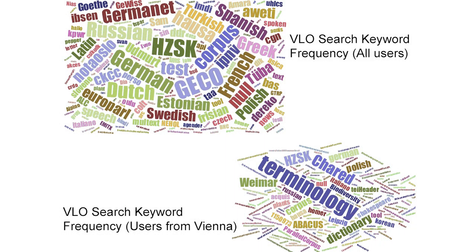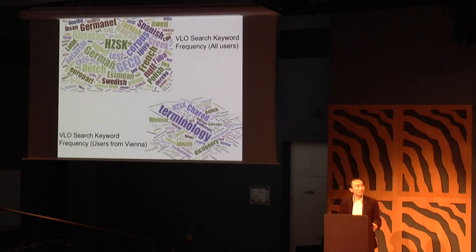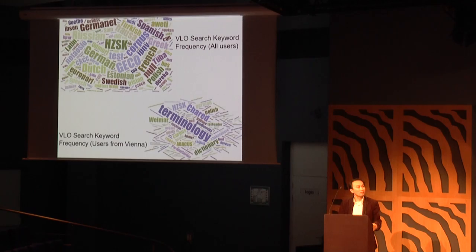I also created a tag cloud for the frequency of search keywords on VLO. This is another perspective to understand what users are actually looking for. I put the keyword data from the entire group and also keywords from, for example, users from Vienna. Some keywords are more popular than others — for example, the names of languages, although we already have a language facet in VLO. It's also interesting to see that different user groups look for different information.